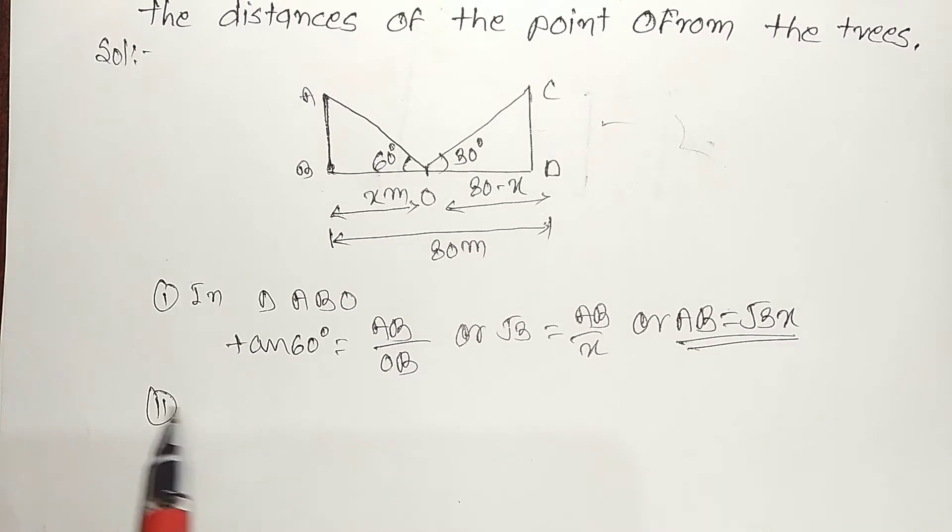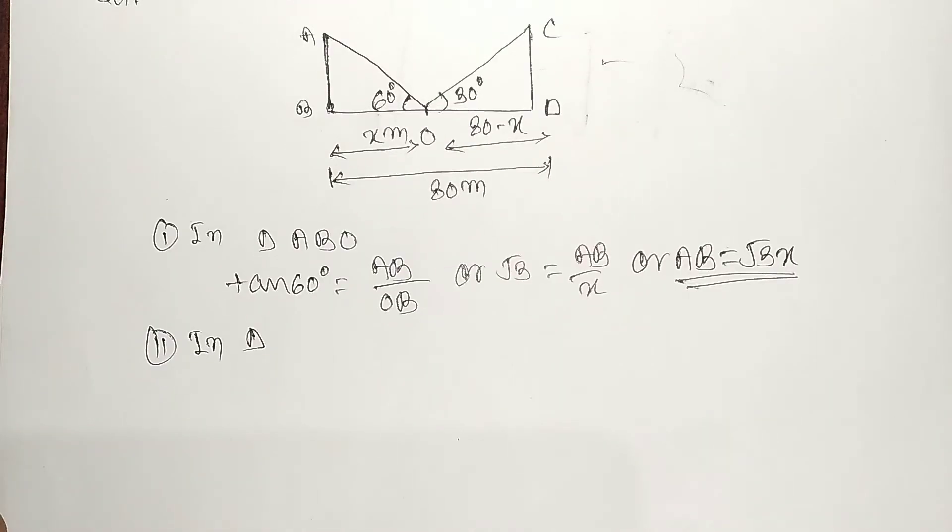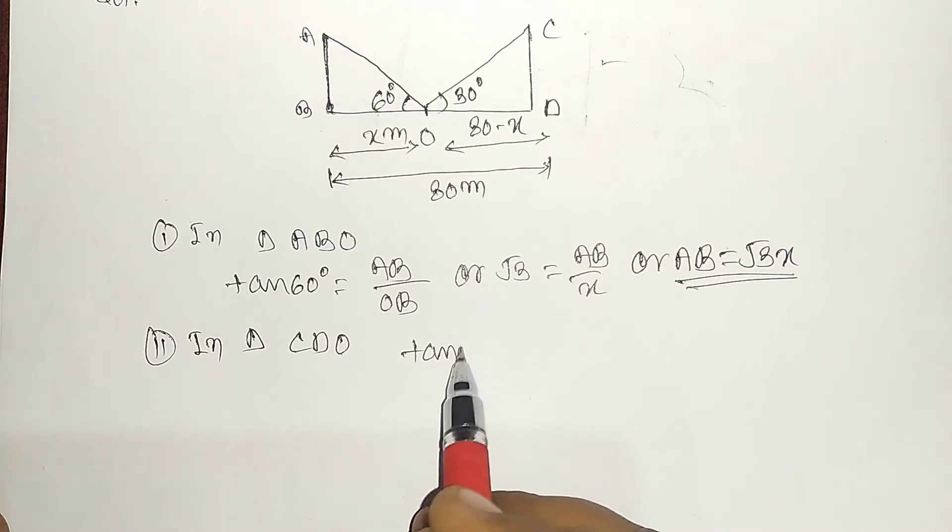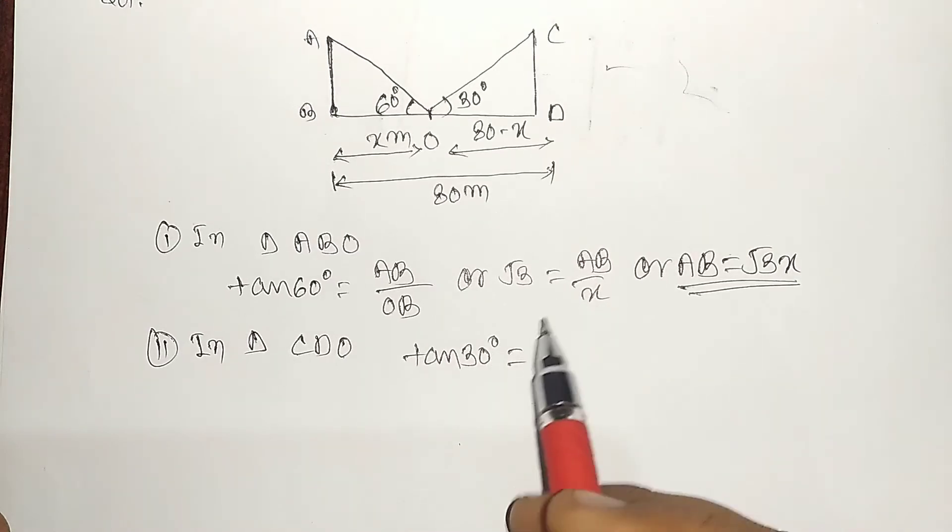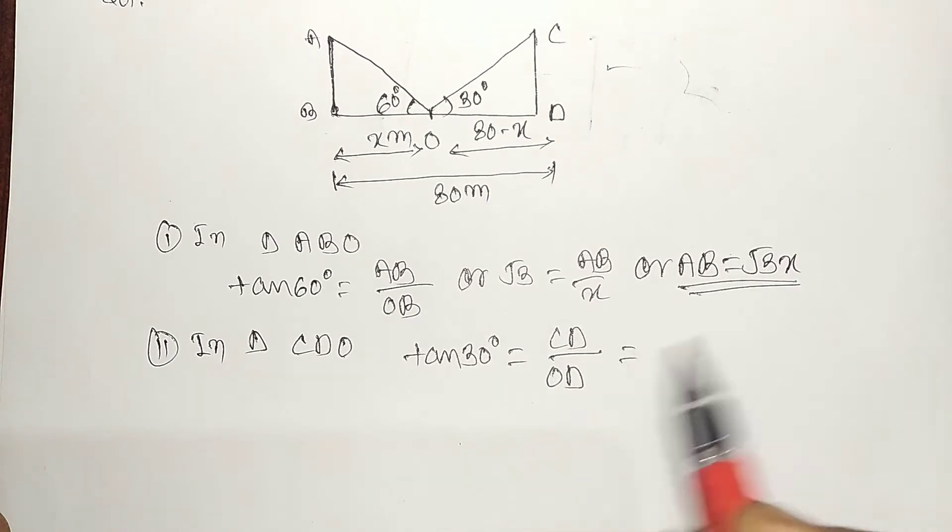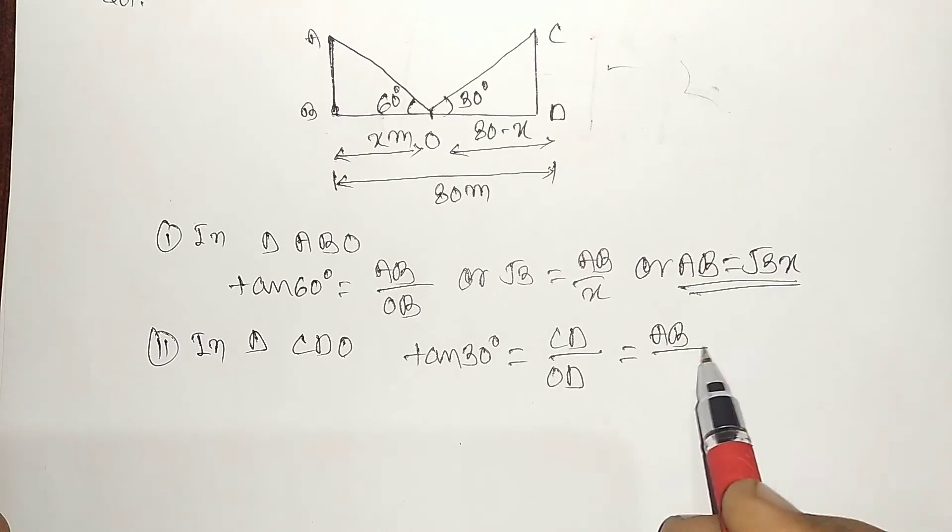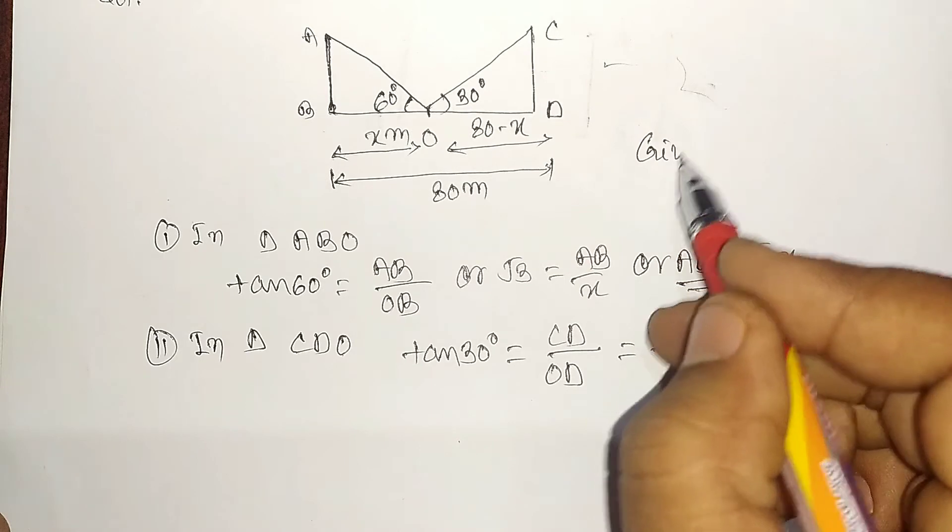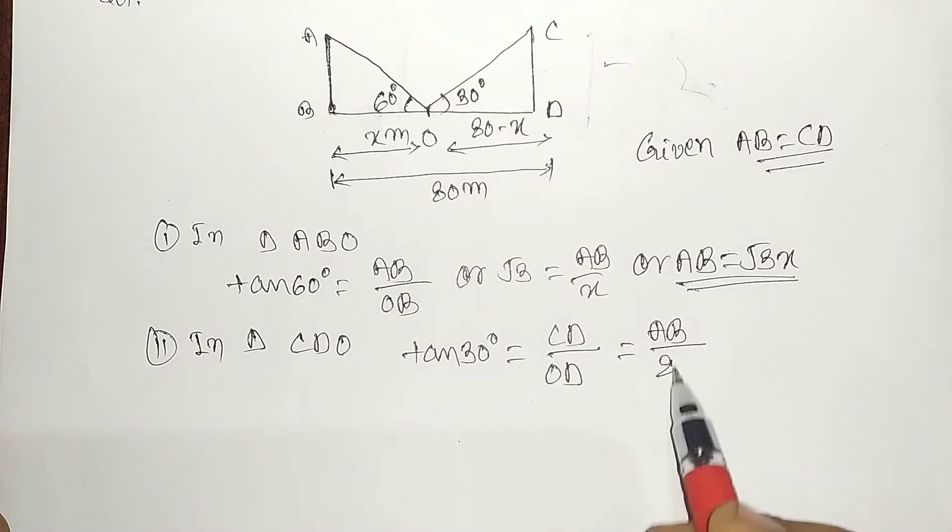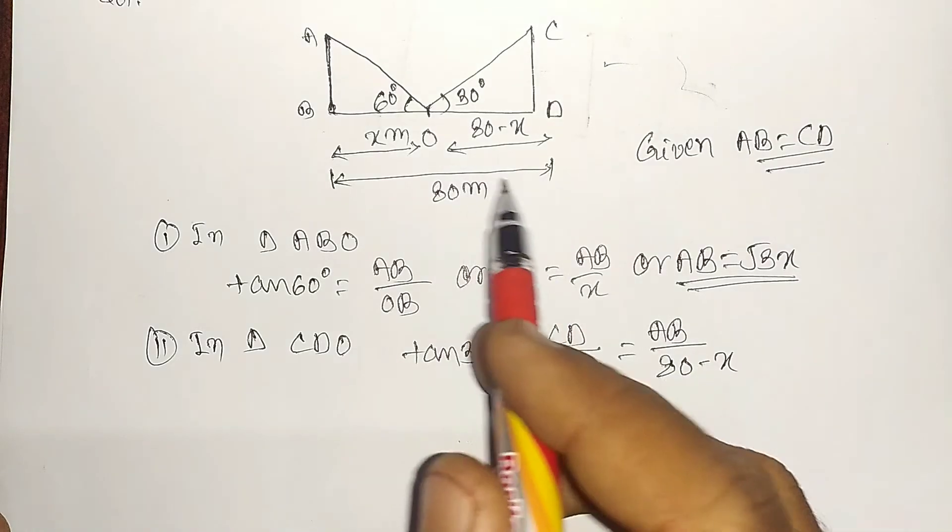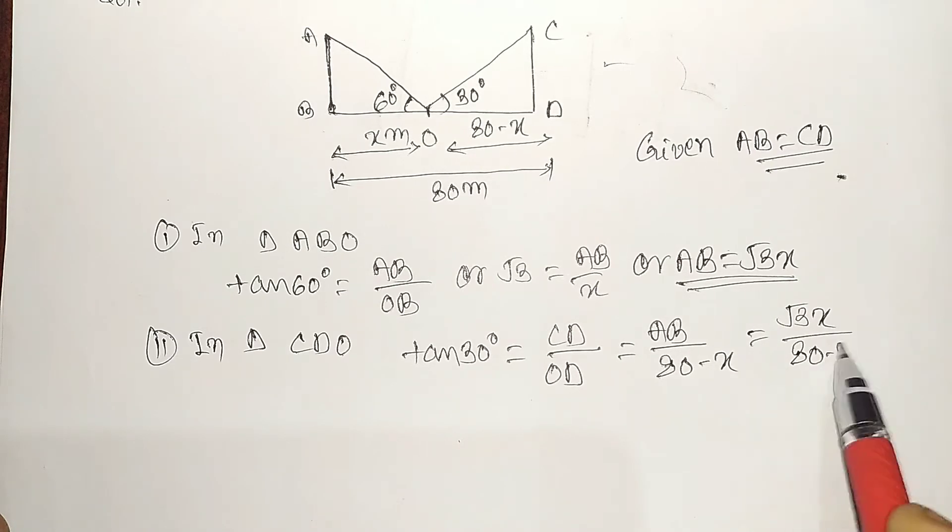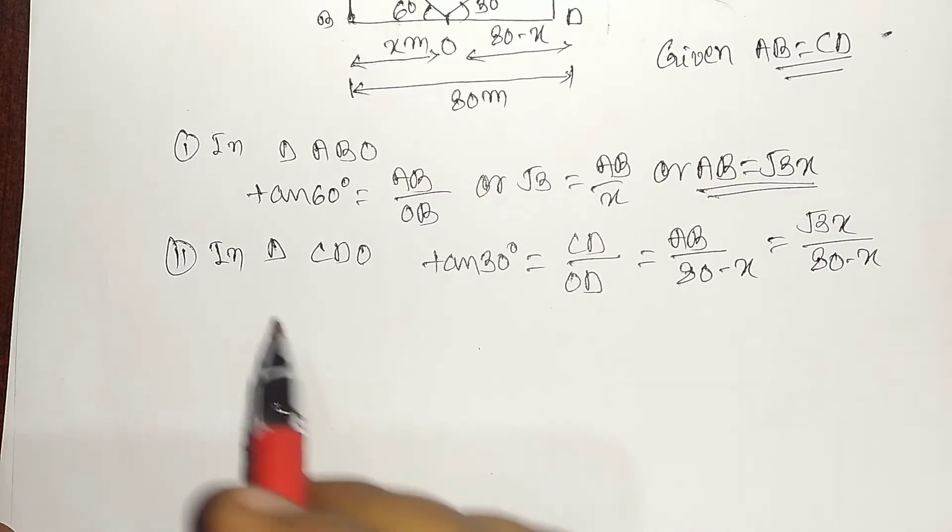Second, in triangle CDO, tan 30 degree equal to CD perpendicular divided by OD, which is equal to AB, which is given AB equal to CD. AB divided by 80 minus x, OD is 80 minus x, and we can see that AB value is root 3x divided by 80 minus x.